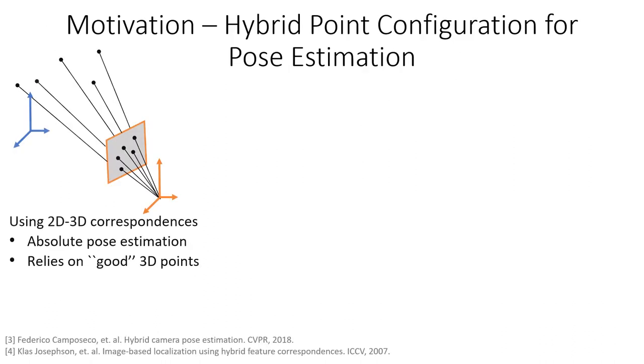The classical problem of absolute pose estimation uses 2D-3D point correspondences to register a pinhole camera, but this approach heavily relies on accurate 3D points.